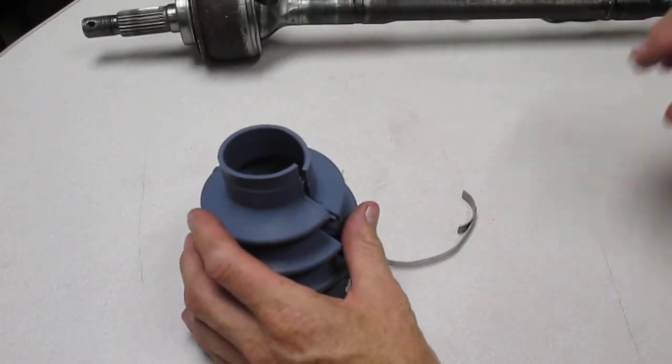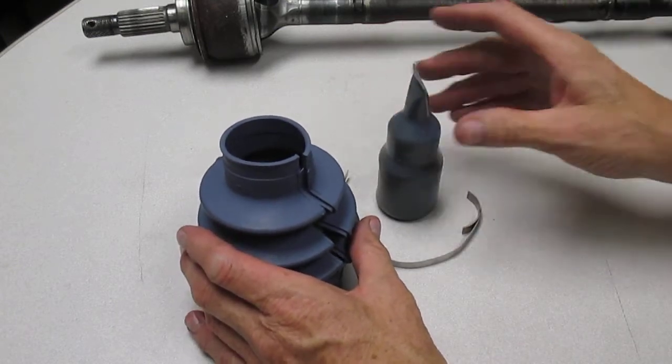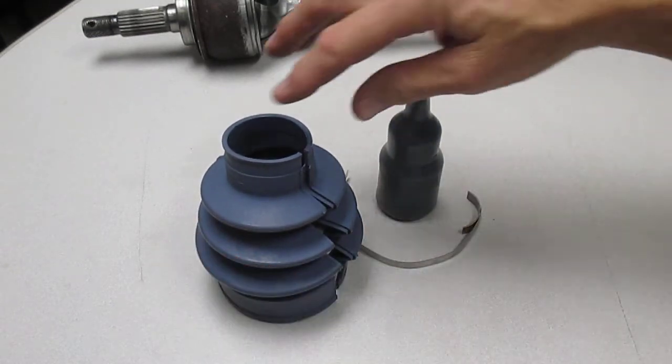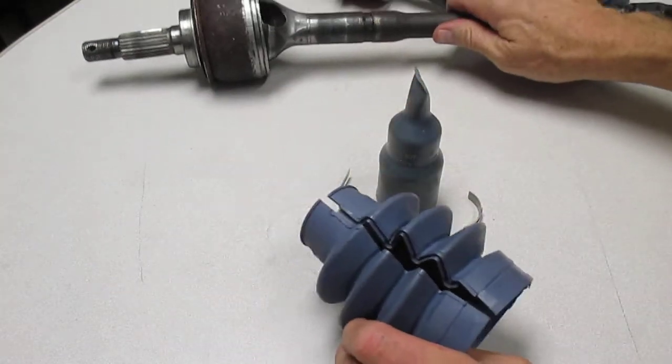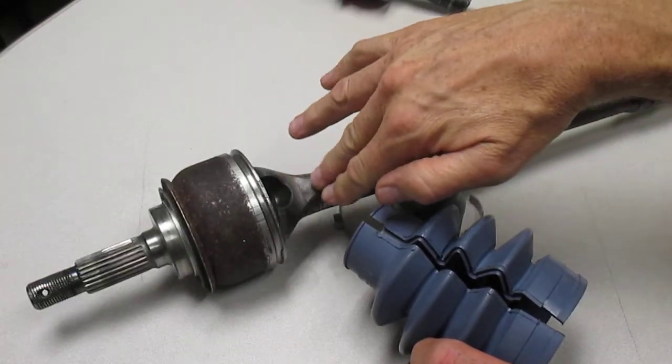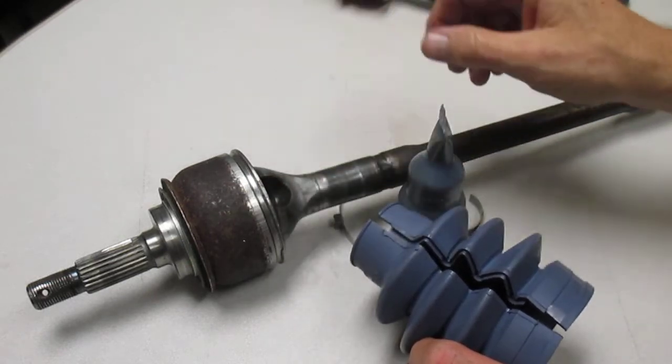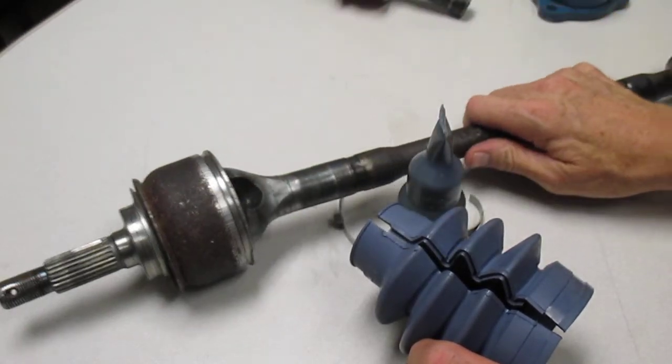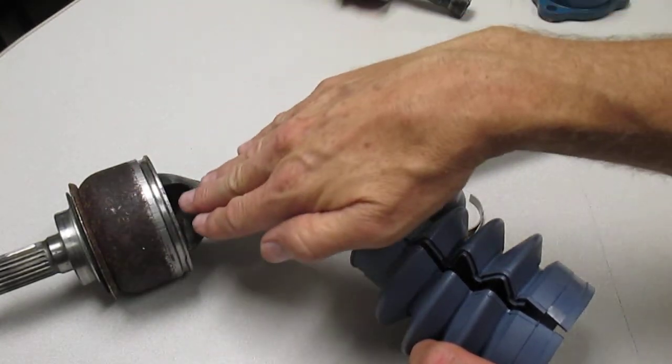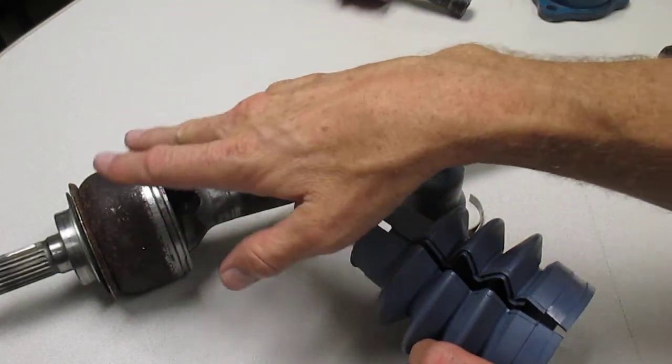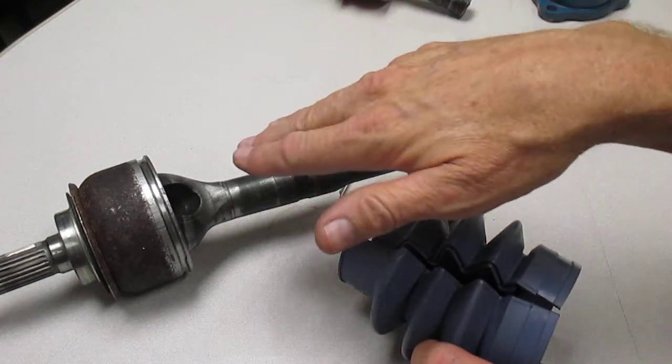One last discussion here. Sometimes you buy these, people are tempted to buy these split boots. They think it's a miracle because the old boot on their shaft is torn, it's slung the grease out and whatnot. Well, just replace the whole shaft. If you've got any kind of CV joint issues or a split boot, a worn joint, the clicking and turns, just replace the shaft. It's so much more economical, trouble-free.